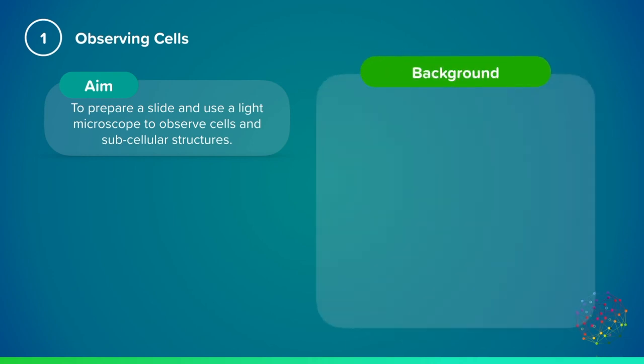When using light microscopes we need to remember some key terms. Magnification is the number of times larger the microscope image is than the original object itself, so the cells that you're viewing.